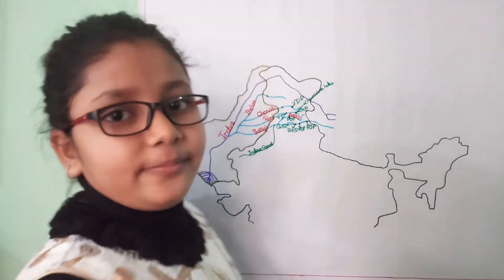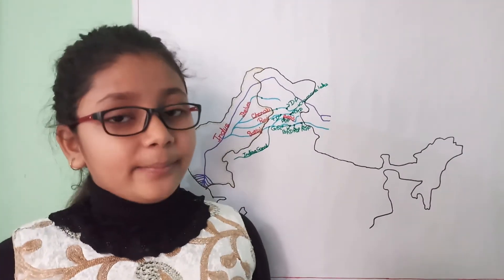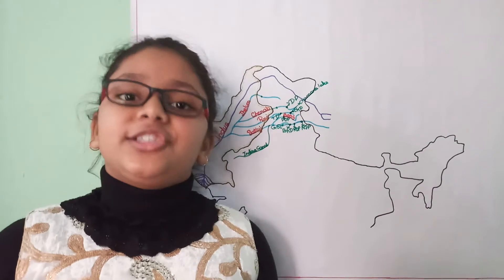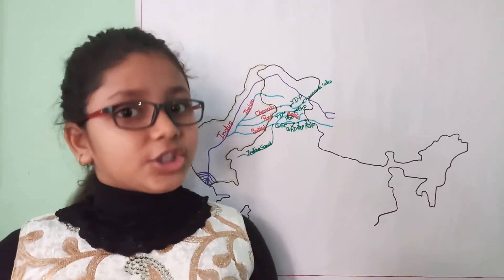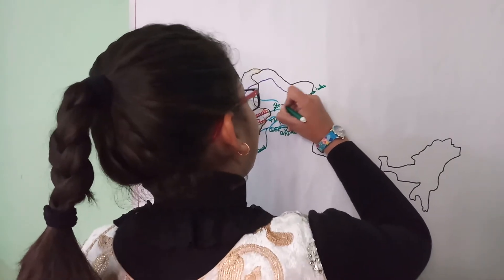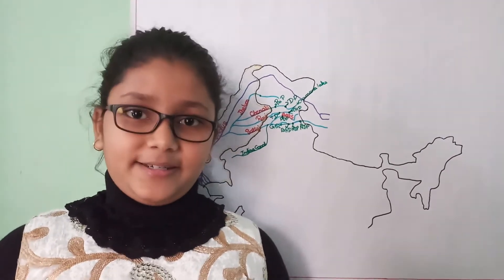So now comes the Baglihar Project. It is built on the Chenab River in Jammu and Kashmir, here. Baglihar Project, and its total capacity is 900 MW.